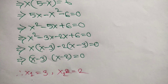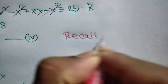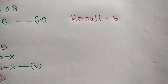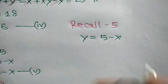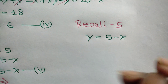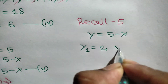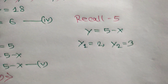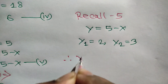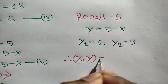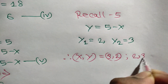Recalling equation 5, y equals 5 minus x, there are two values of y. So y₁ equals 2 and y₂ equals 3. Therefore the pairs (x, y) are either (3, 2) or (2, 3).